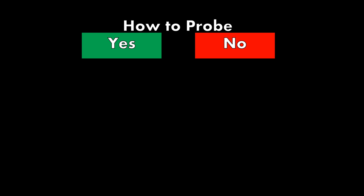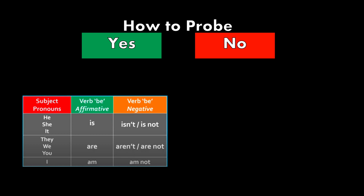So how do we form yes or no questions? If you look at the chart I've provided in our previous lesson, the same rules still apply. But this time, we're going to use it as a reference to ask questions. Let's look at the first question: 'You good at skateboarding.' The subject pronoun is 'you'. For the subject pronoun 'you', the verb be affirmative form is 'are'. So the answer is: Are you good at skateboarding?